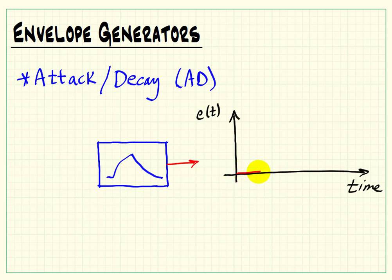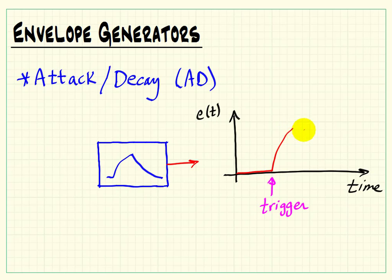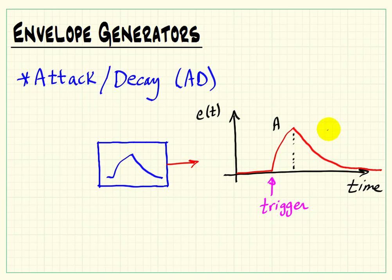The envelope, when plotted as a function of time, is normally zero. When something happens to trigger the production of that envelope, it rapidly rises to a maximum value — this is the attack phase — and then it begins decaying back towards zero. This wave shape mimics the envelope of many physical instruments, where they have a transient at the beginning and then the sound tapers off towards zero after that.